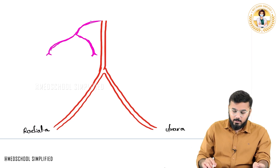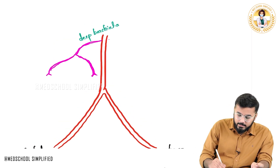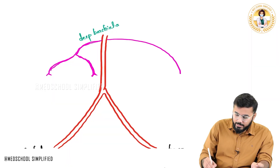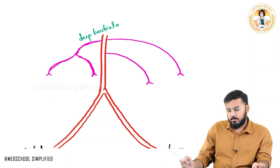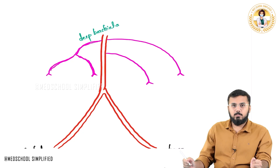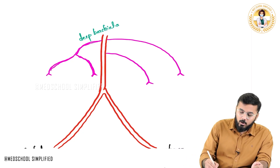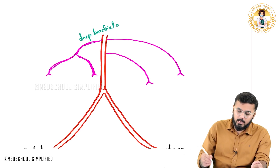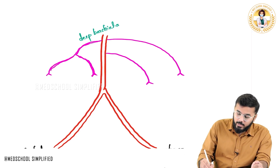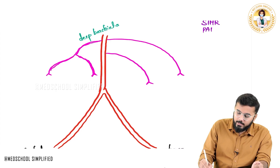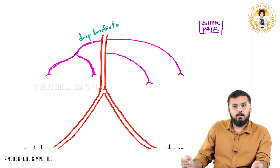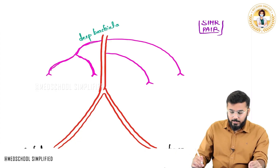On the other hand, directly arising from the brachial artery there are two additional branches, making four branches total from the brachial artery. You can remember all of these branches using the mnemonic S-I-M-R-P-A-I-R.